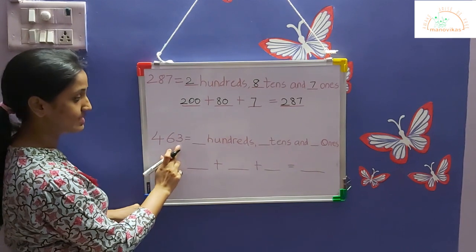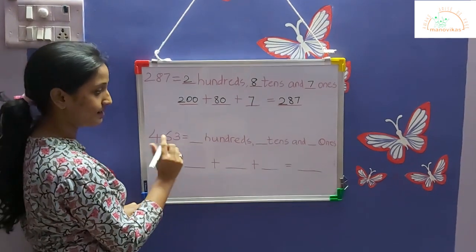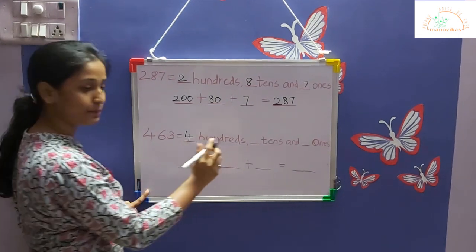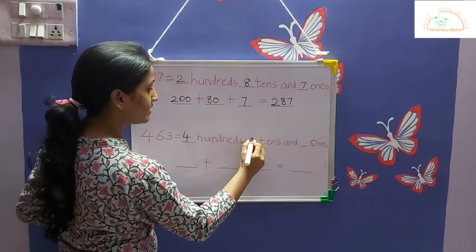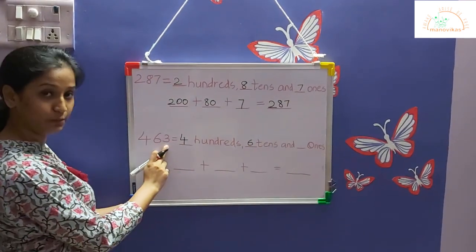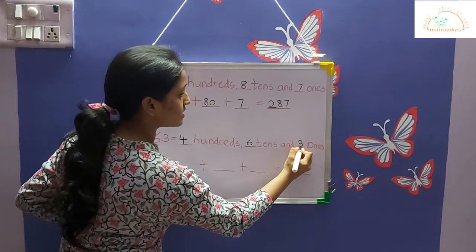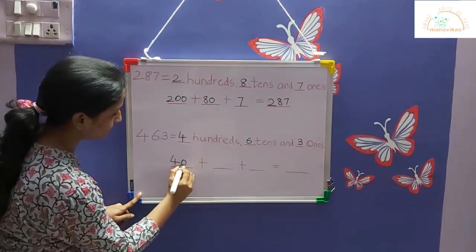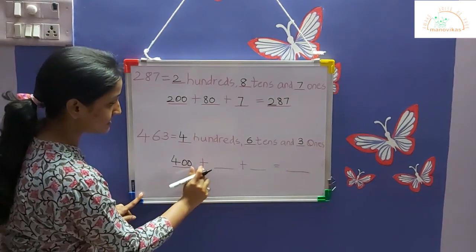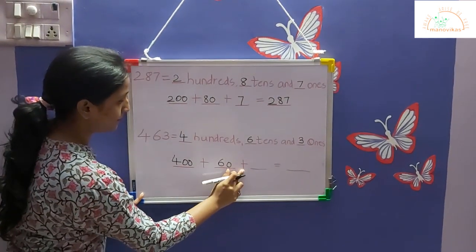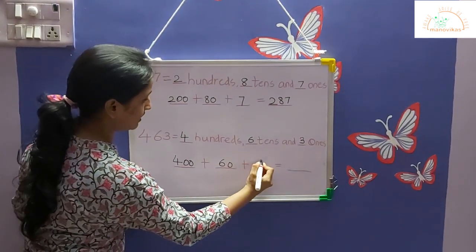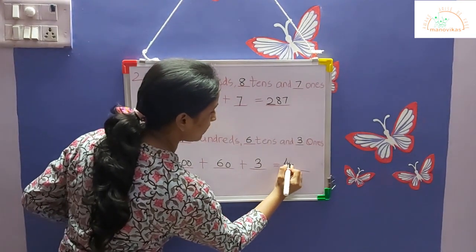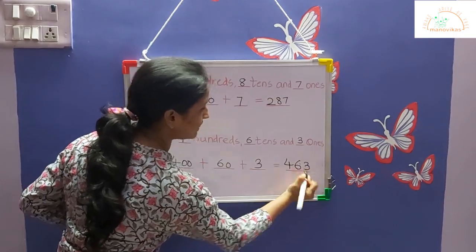The next one — four hundred and sixty-three. Hundreds will be four, six will be tens, and three will be ones. And the other way: 400 plus 60 plus 3, which makes up to four hundred and sixty-three.